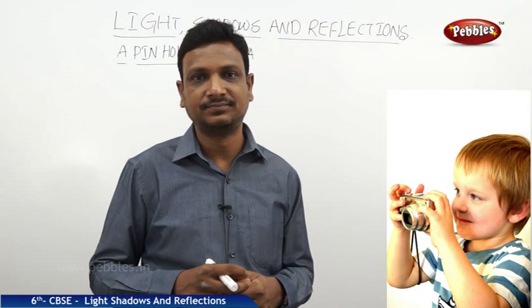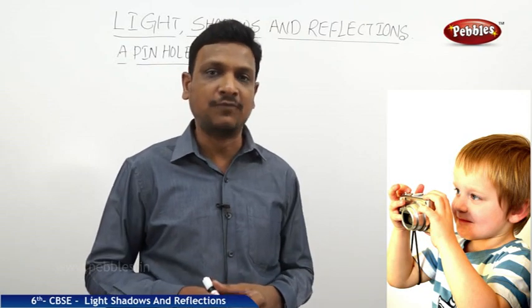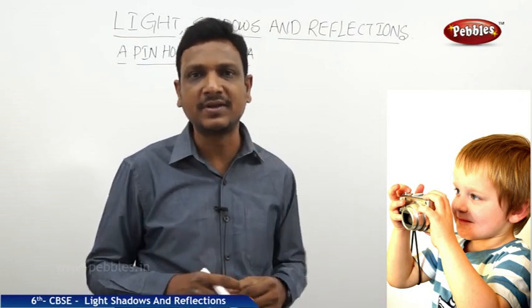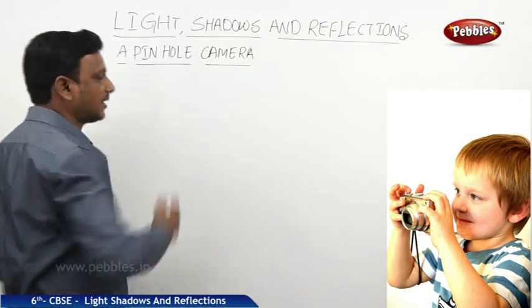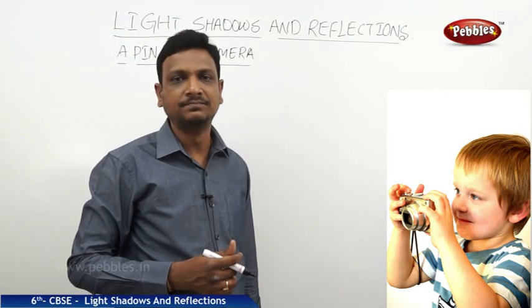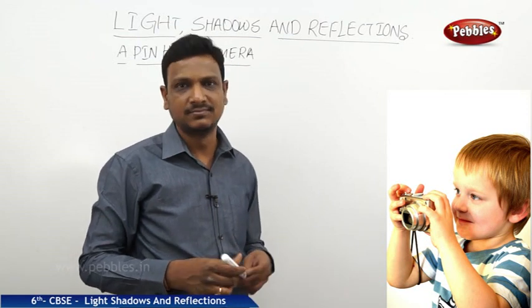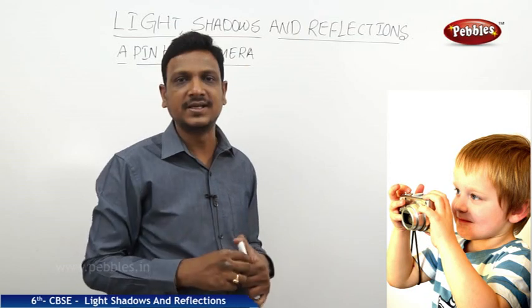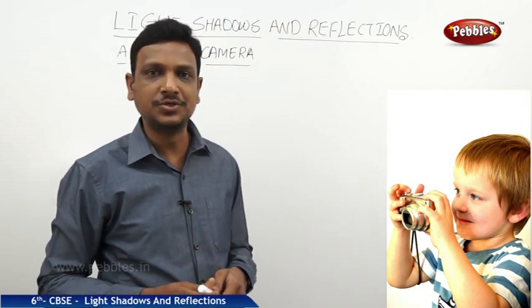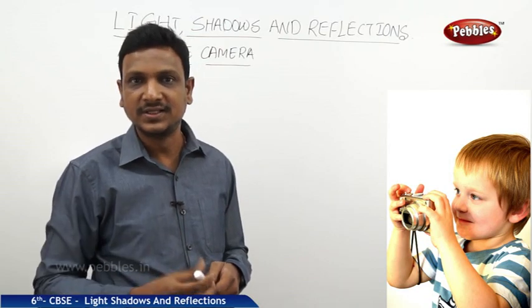We have two cameras. Now let us see how we can make a camera. Of course, we are not going to make a very complicated camera. We are going to make a simple camera called a pinhole camera. What is this pinhole camera and how is it useful? By making this pinhole camera, you can get the images of various objects onto a screen — you can cast the image of an object onto a screen.